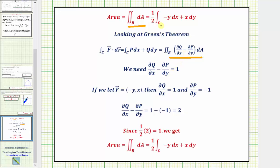Looking at the line integral, since we have negative y dx plus x dy, the vector field F would have an x-component of negative y and a y-component of x. The partial of Q with respect to x would be one, and the partial of P with respect to y would be negative one. So the difference of the two partial derivatives equals two, not one.